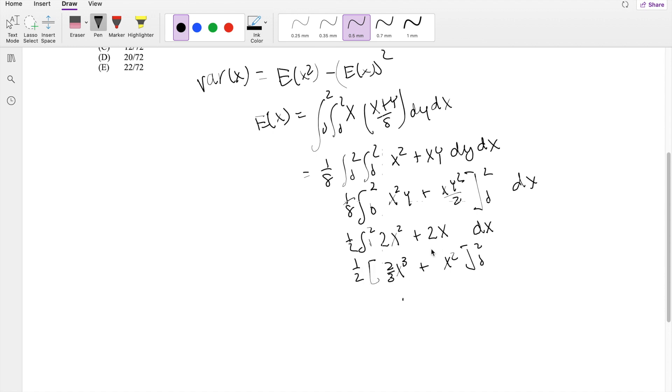2 to the cube is 8, so 16/3 plus 4. Dividing by 8, not 2. This equals 7/6.